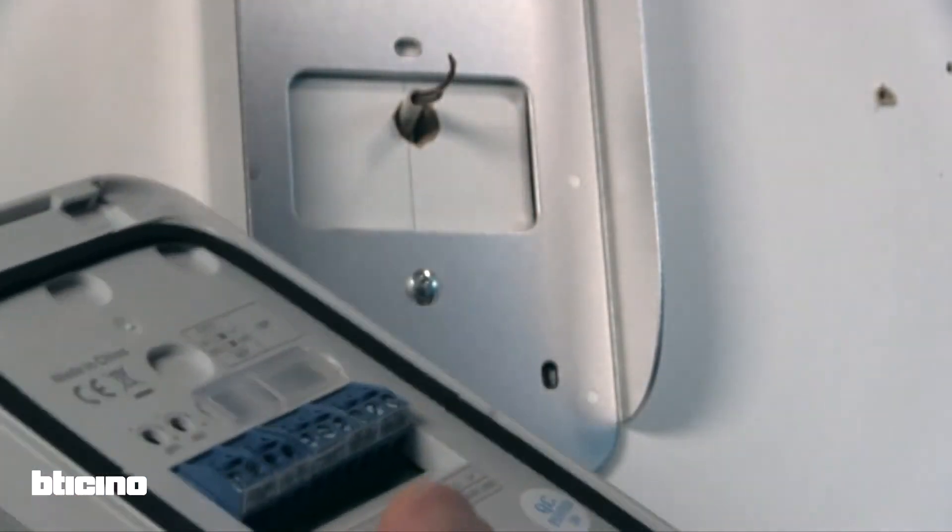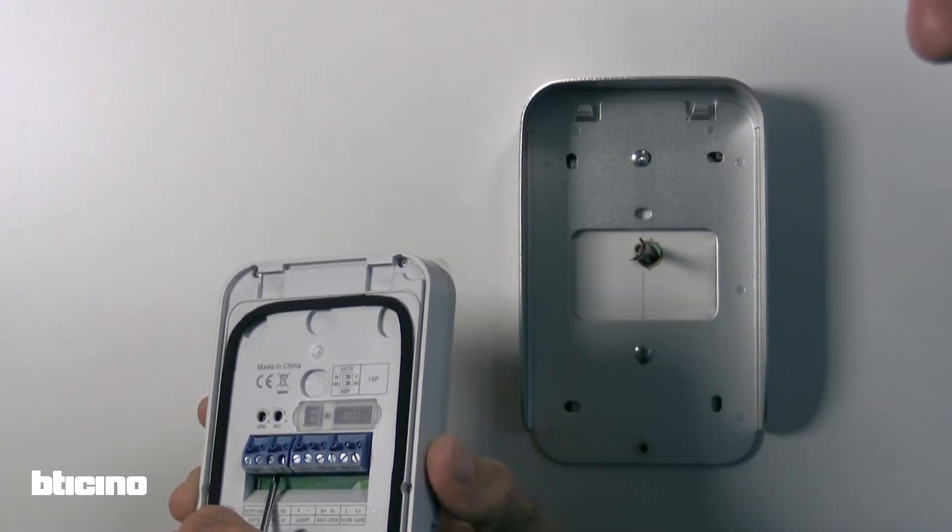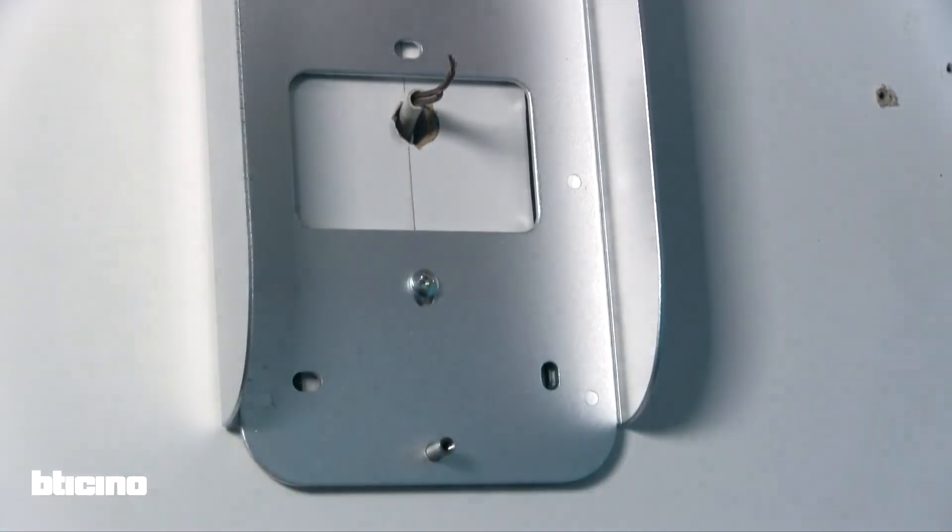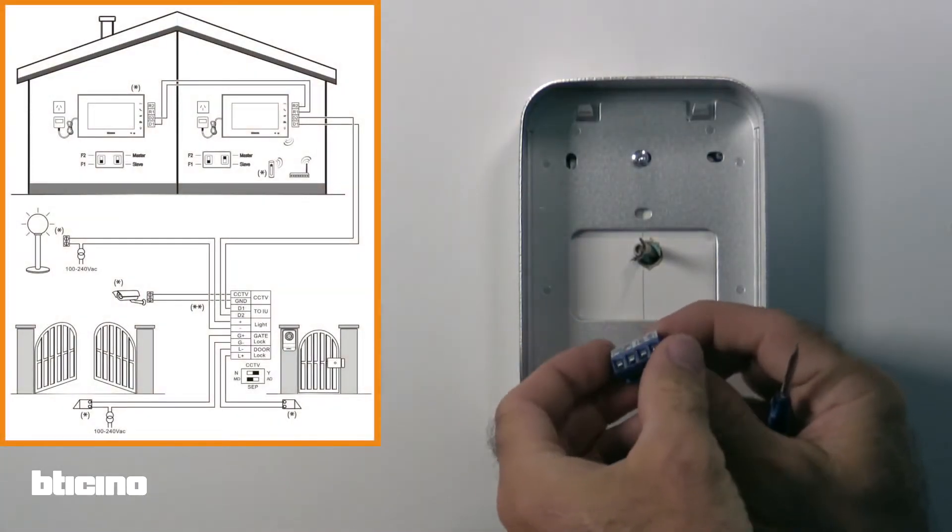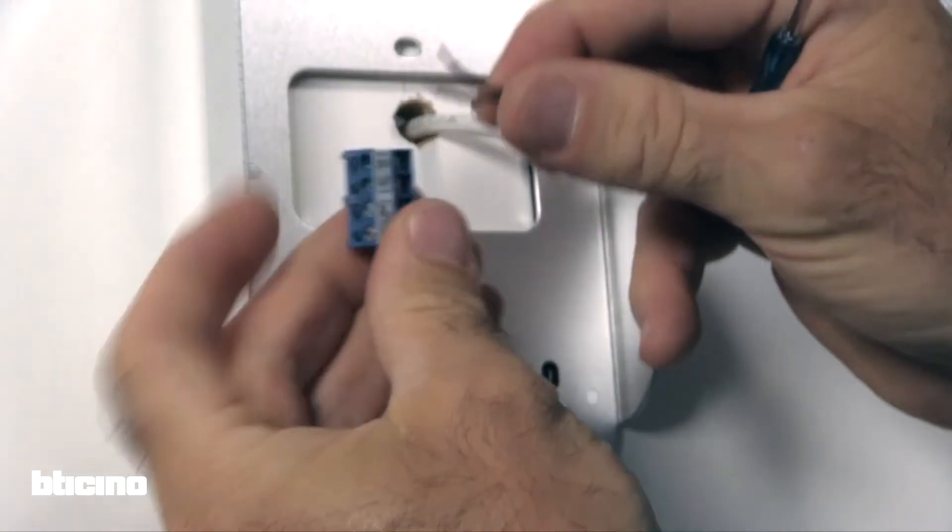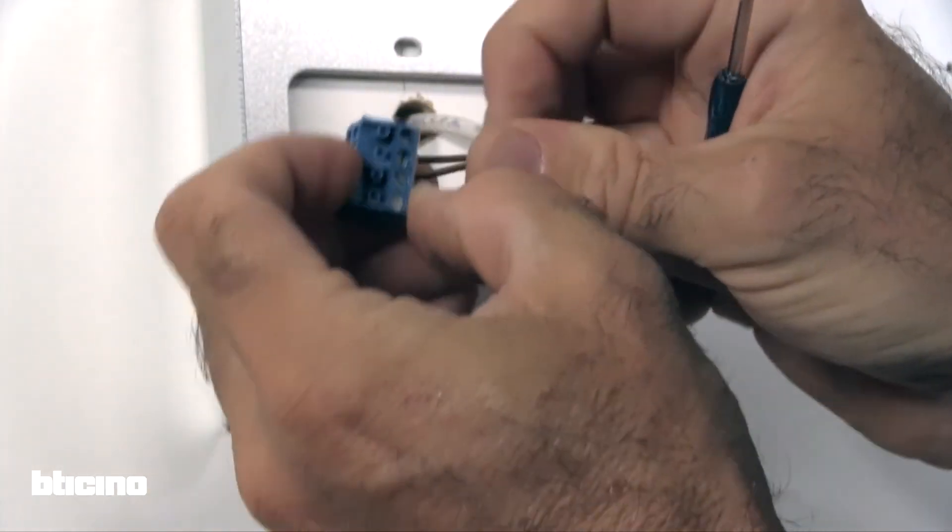For convenience, we recommend disconnecting the blue terminal to connect the wires from the hands-free internal unit. Using the diagram found in the installation manual, connect the two wires from the internal unit to terminals D1 and D2 respectively.